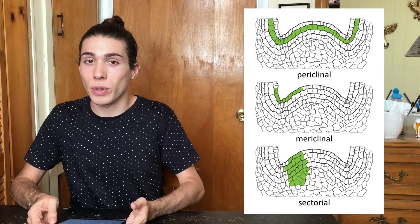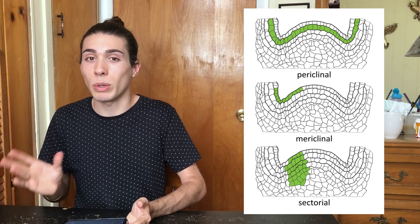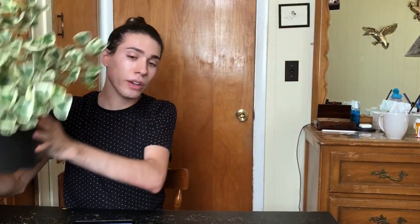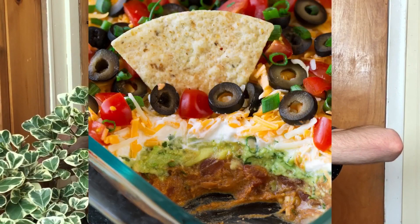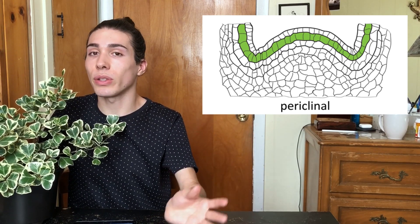I have examples for all three so I'll talk about all of them, even though only one applies to the Monstera Albo Borsigiana. Here is the first type: periclinal chimeric variegation, demonstrated by a Ficus triangularis variegata. In this type, one layer of cells over the meristem or growth shoot is lacking chlorophyll. This is the most stable chimeric variegation, meaning it is the least likely to revert back to green or to create leaves that are entirely achlorophyllous.